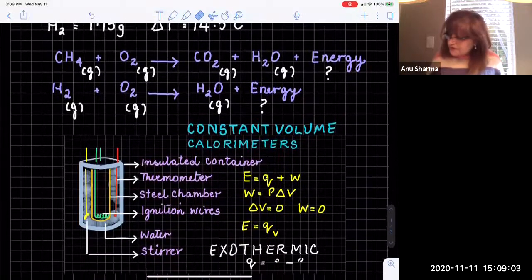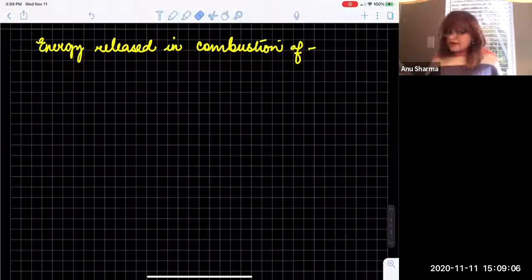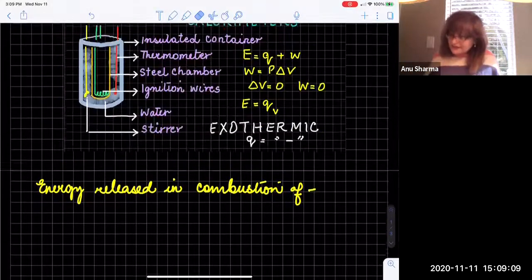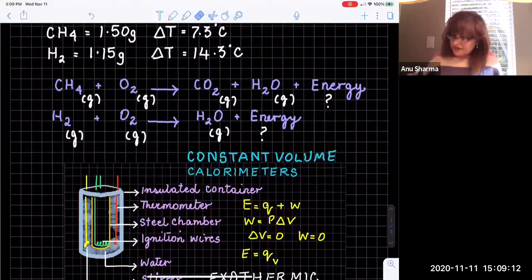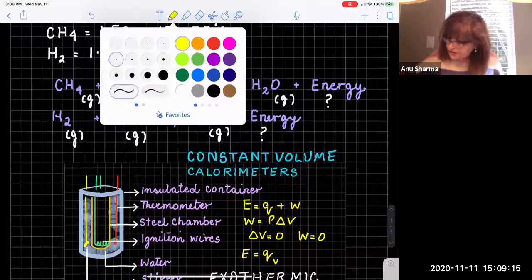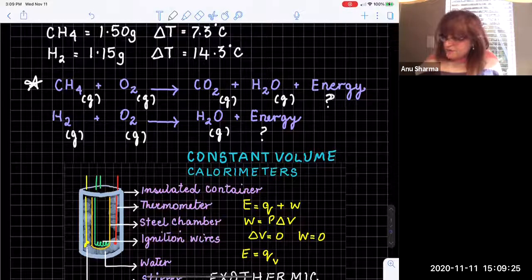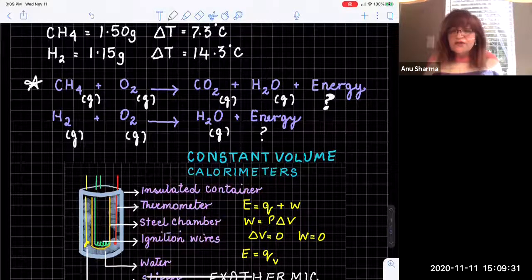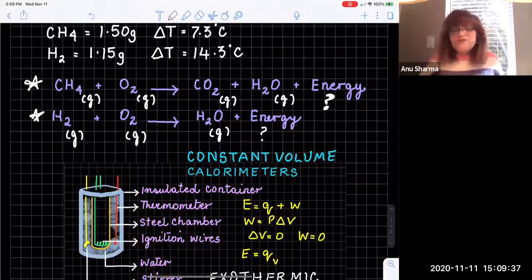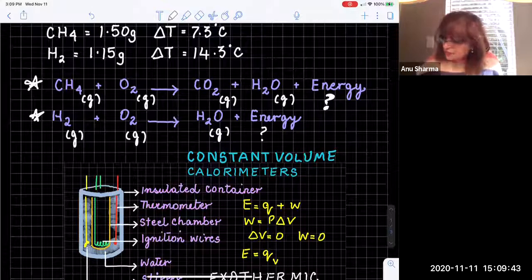Let's look at the calculations for the energy released in combustion. Here are the reactions: methane reacting with oxygen at high temperature — that's combustion — releasing energy, with carbon dioxide and water in their gaseous states as products. Next is hydrogen: 1.15 grams of hydrogen combusted with oxygen gives water and a large amount of energy. How much of that energy is released? Let's look at the calculations.